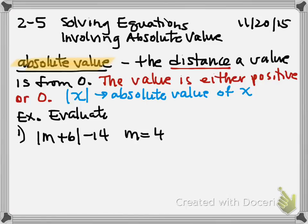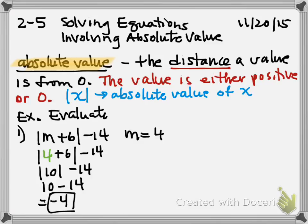Okay, so we have the absolute value of m plus 6, that minus 14, and I'm going to tell you that m equals 4. Okay, so how we solve this is where we see m, we substitute in 4. And we go about solving the problem. Well, inside, by the way, absolute value is a grouping symbol. So 4 plus 6 is 10. The absolute value of 10, well, it's 10 away from 0, so it's just 10. And then 10 take away 14 is negative 4.